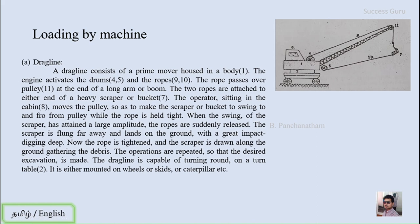The rope passes over the pulley 11 at the end of the long boom, so the pulley is moved by the movement of the rope. The two ropes are attached to either end of the heavy scrapper or bucket. So the two ends of ropes 9 and 10 have been attached to this bucket or scrapper. The operator sitting in the cabin moves the pulley so as to make the scrapper or bucket swing to and fro while the rope is held tight.